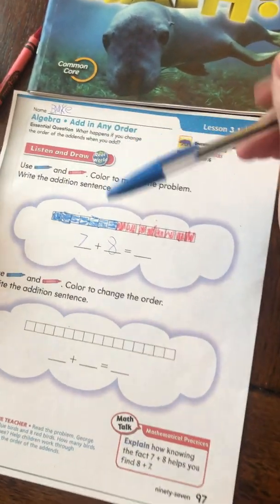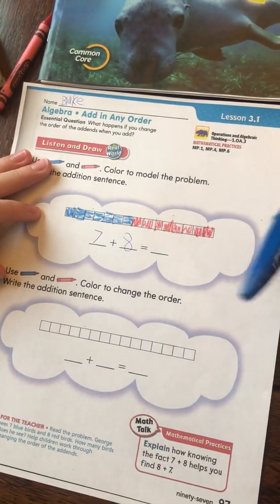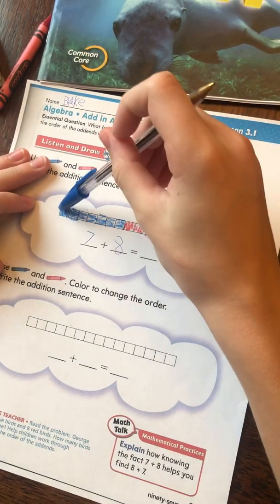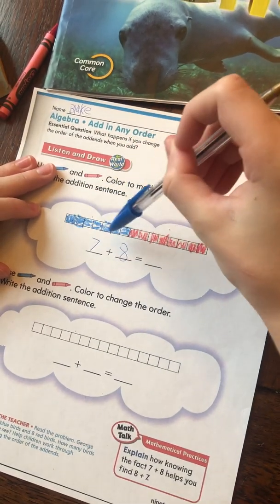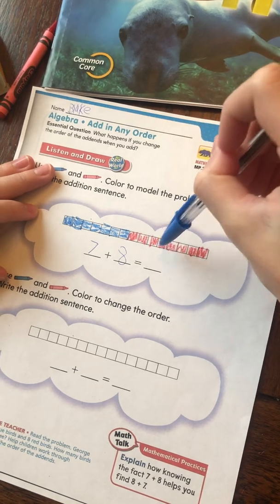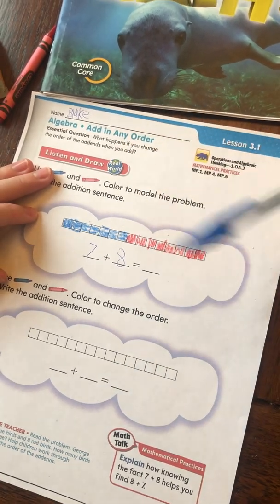Oh, okay. And then you counted them all, and you got one, two, three, four, five, six, seven, eight, nine, ten, eleven, twelve, thirteen, fourteen, fifteen. Fifteen, okay.